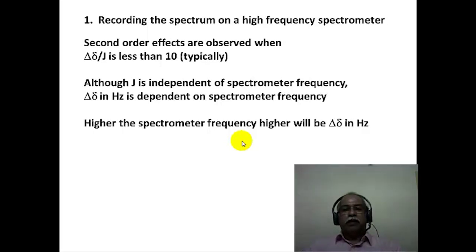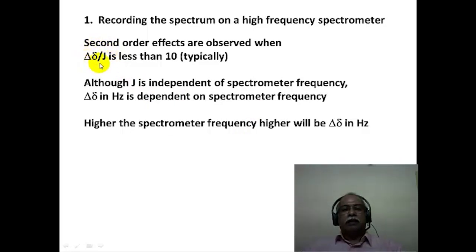Why does high spectrometer frequency help in solving second order spectra? Second order effects arise when the ratio delta-delta divided by J is less than 10. Although J is independent of spectrometer frequency, delta-delta expressed in hertz is not. Therefore, a higher spectrometer frequency increases delta-delta in hertz, and since J remains constant, the ratio delta-delta divided by J increases, reducing the complexity of the spectrum.